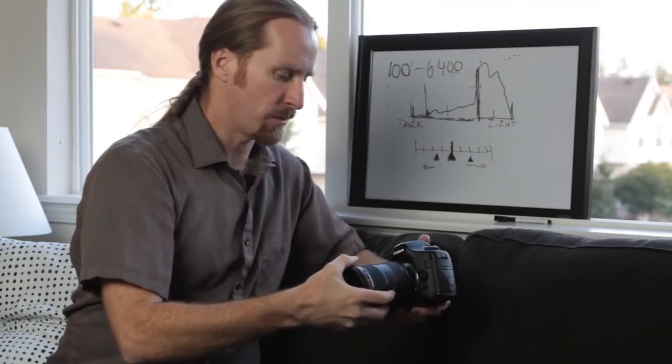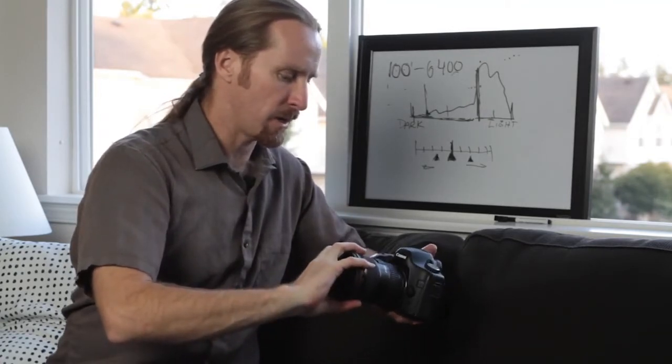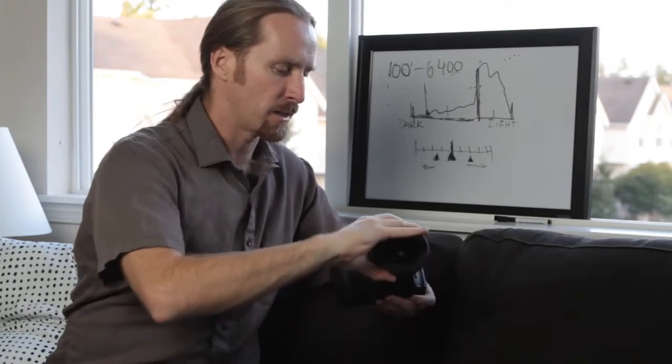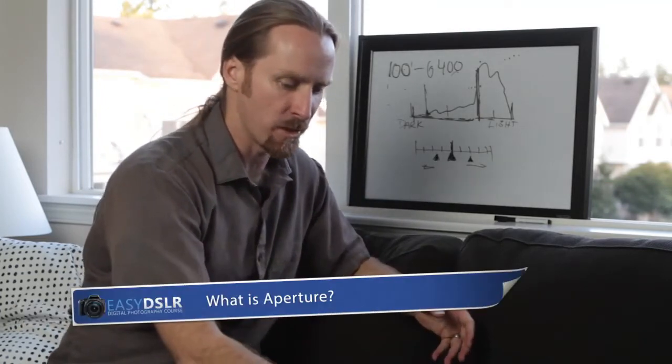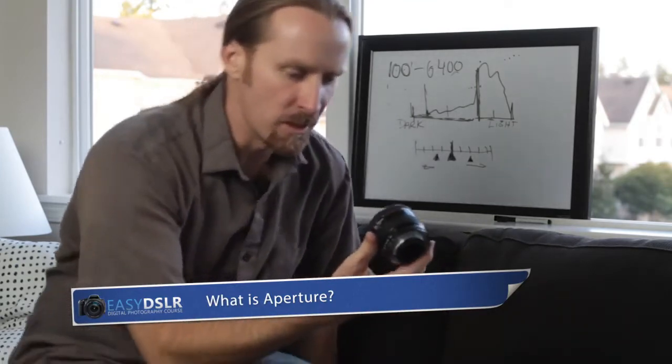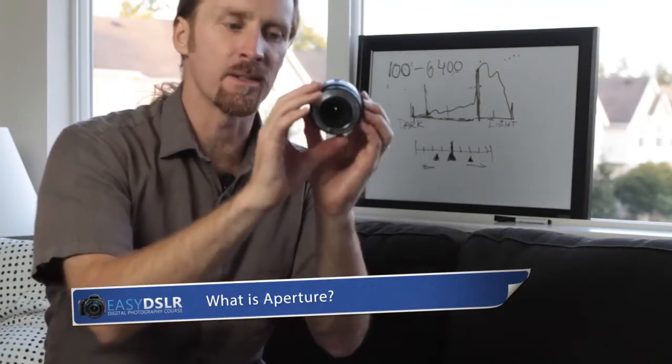So the aperture is one of the first key things that affects the amount of light that goes onto the sensor. Now the best way to show you what aperture is, is actually to show you on one of these older manual lenses.